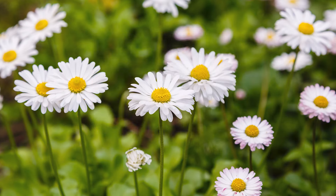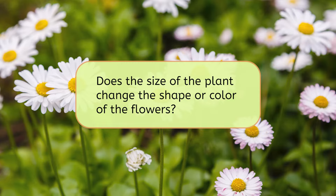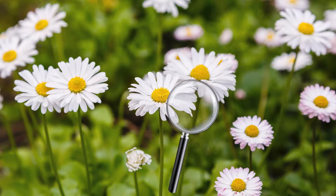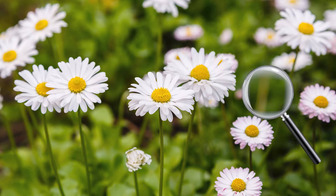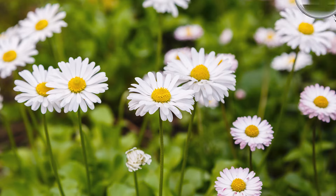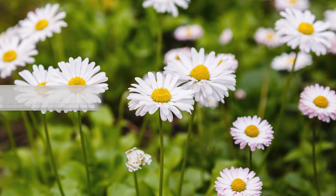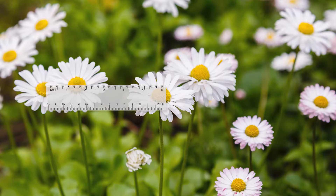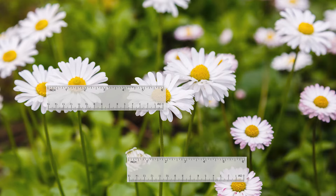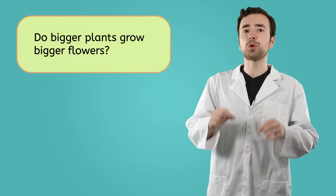These observations can help us answer one of the questions I had — I was wondering if the size of the plant changes the shape or color of the flowers. We can observe the plants and find out that, nope, no matter the size of the plant, the flowers are the same shape and same color. We can also describe observations with numbers. We might observe that these larger flowers at the top are about three inches wide, but the ones on the bottom are only about one inch wide. These observations can help us answer another question: are the bigger plants also growing bigger flowers? We can compare the measurements to see that, yep, the taller plants were growing bigger flowers as well. Observational investigations are a great way to answer our questions.